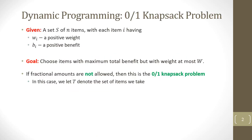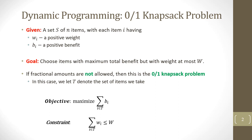So what is a knapsack problem? We are given a set of n items, with each item i having a positive weight w_i and a positive benefit b_i. Our goal is to choose items with maximum total benefit but with a weight at most W, which is the capacity of the knapsack. If fractional amounts are not allowed, then this is the 0-1 knapsack problem. We let T denote the sum of items we take, so our objective is to maximize the sum of all the benefits of the selected items, subject to the constraint that the total weight is less than or equal to the knapsack capacity.